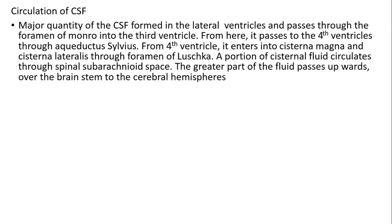Circulation of CSF: the major quantity of CSF is formed in the lateral ventricle and passes through the foramen of Monroe into the third ventricle. From here it passes through the aqueductus sylvius. From the fourth ventricle, it enters the cisterna magna and cisterna lateralis through the foramen of Luschka. A portion circulates through the spinal subarachnoid space; the greater part passes upwards over the brainstem to the cerebral hemispheres.